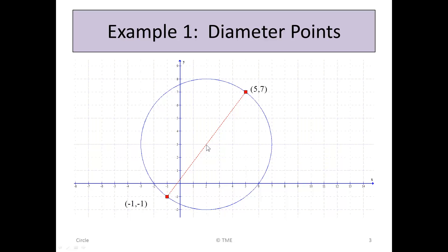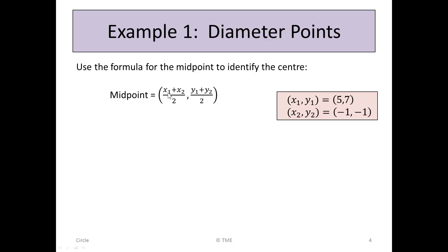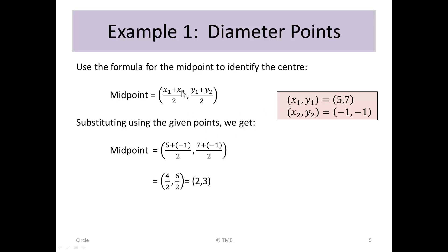So let's start by finding the midpoint of that line segment to identify the centre. The midpoint formula from the tables is ((x1 + x2)/2, (y1 + y2)/2). With (x1, y1) = (5, 7) and (x2, y2) = (-1, -1), we get (5 + (-1))/2 = 4/2 = 2, and (7 + (-1))/2 = 6/2 = 3. So the midpoint of the diameter is (2, 3), which becomes the centre of the circle.